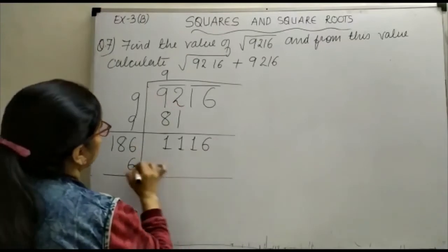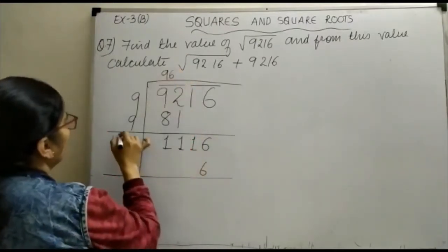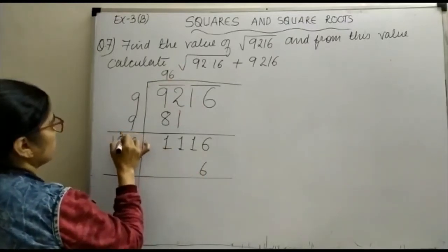6 again. 6 times 6 is 36, 6 here. 6 times 6 is 36, 6 here, 3 carry. 6 times 8 is 48.